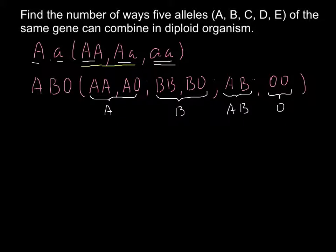As you see, the more alleles we have, the more complicated our problems become. We have one, two, three, four, five, six genotypes, and one, two, three, four phenotypes.